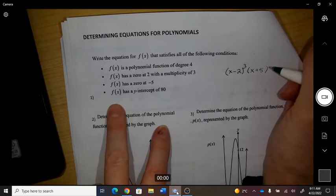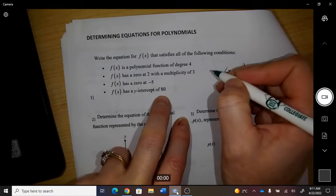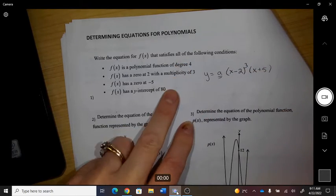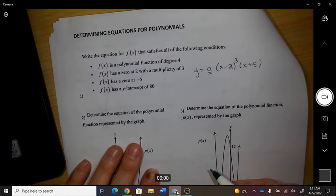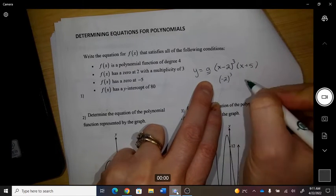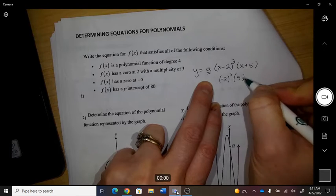And it has a y-intercept of 80, so I'm going to have to figure out what that value is. So if x was zero, this would be negative 2 cubed and 5.